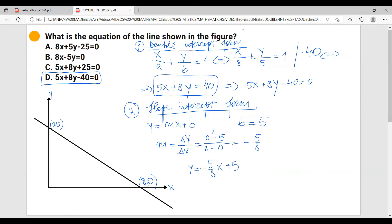We get 8y plus 5x, and if we are going to multiply this by 8, we get 8y plus 5x minus 40 equals zero. If we rearrange this, we get 5x plus 8y minus 40 equals zero. And again, we got the same thing and the correct answer is D.